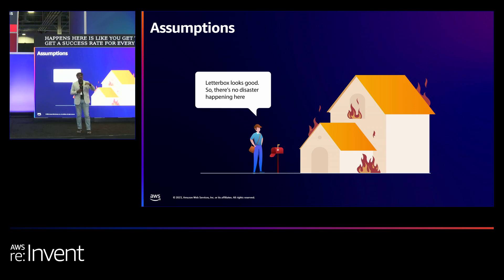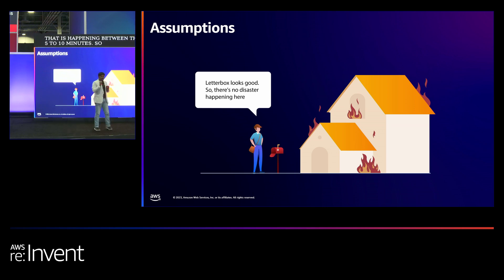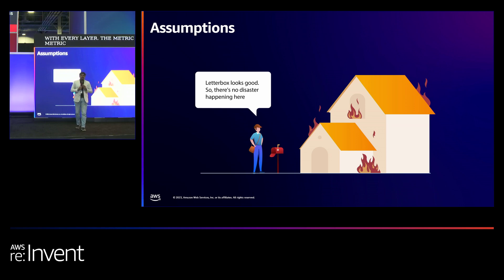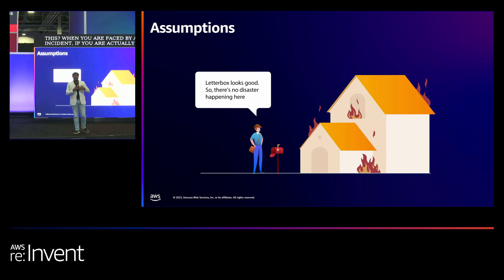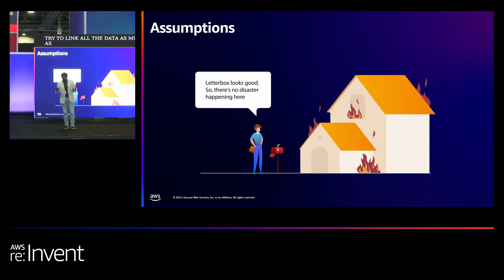What happens if your customer is actually having a failure within those five, ten, or fifteen minutes? You may also fail to capture a performance issue happening for customers between those intervals. It is always important to cover your entire application layer by layer, metric by metric, completely captured and linked together. When you are faced by an incident, if you are putting a lot of effort into linking all the data and creating an RCA, the mean time to resolution tends to get a lot bigger. We would suggest linking all the data as much as possible with a single solution, or if using multiple tools, link the data together so you don't spend excessive time during an incident.